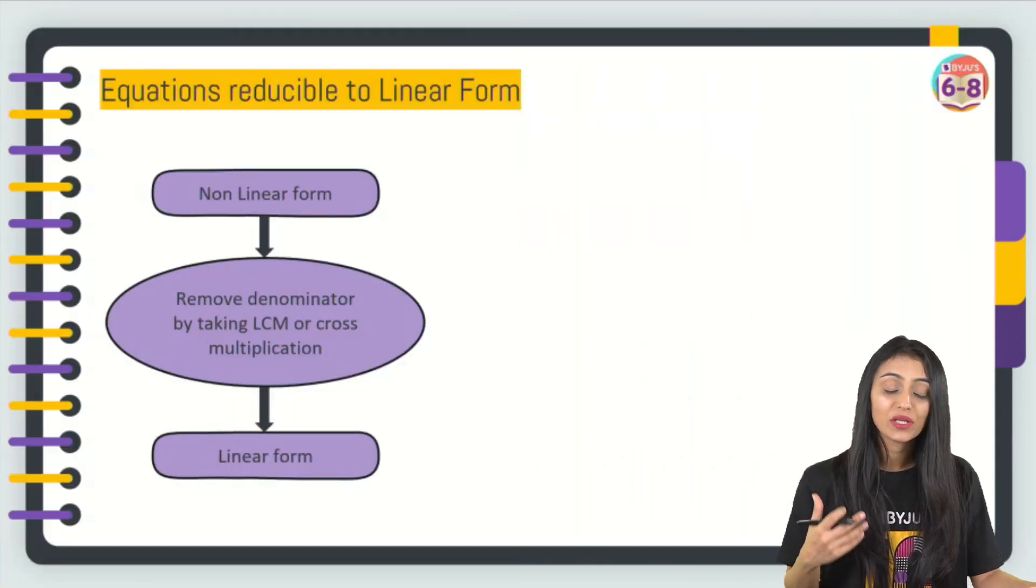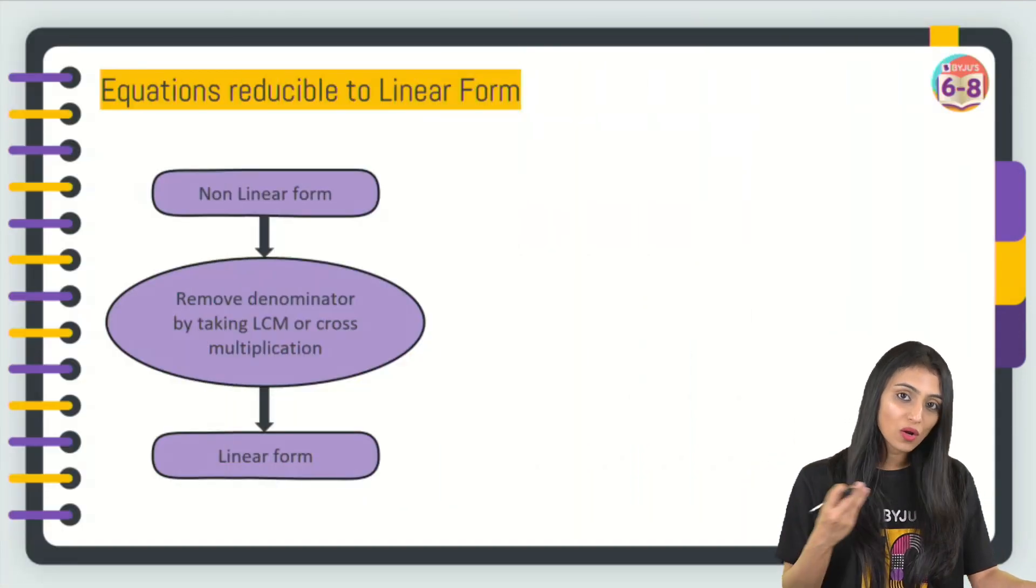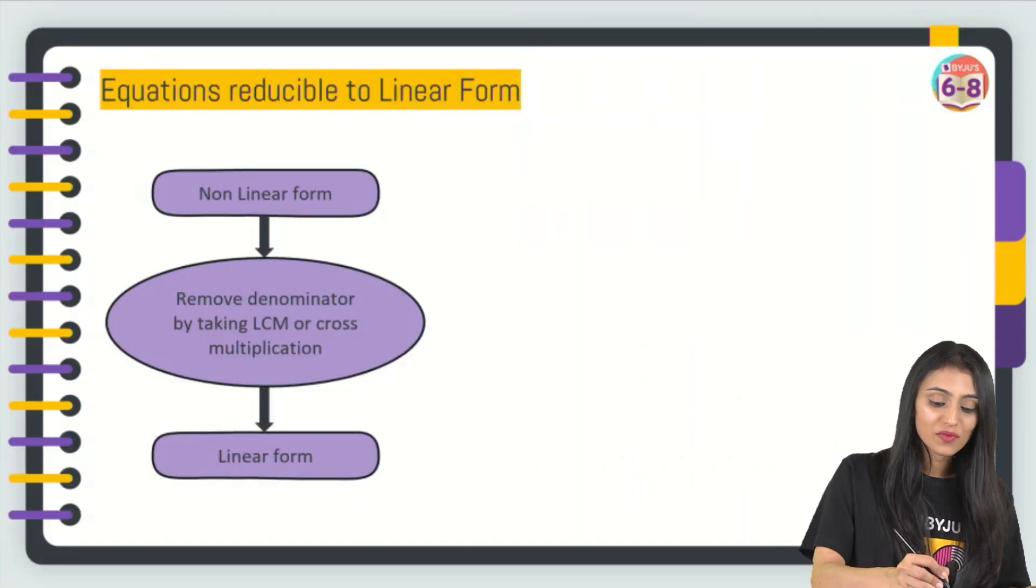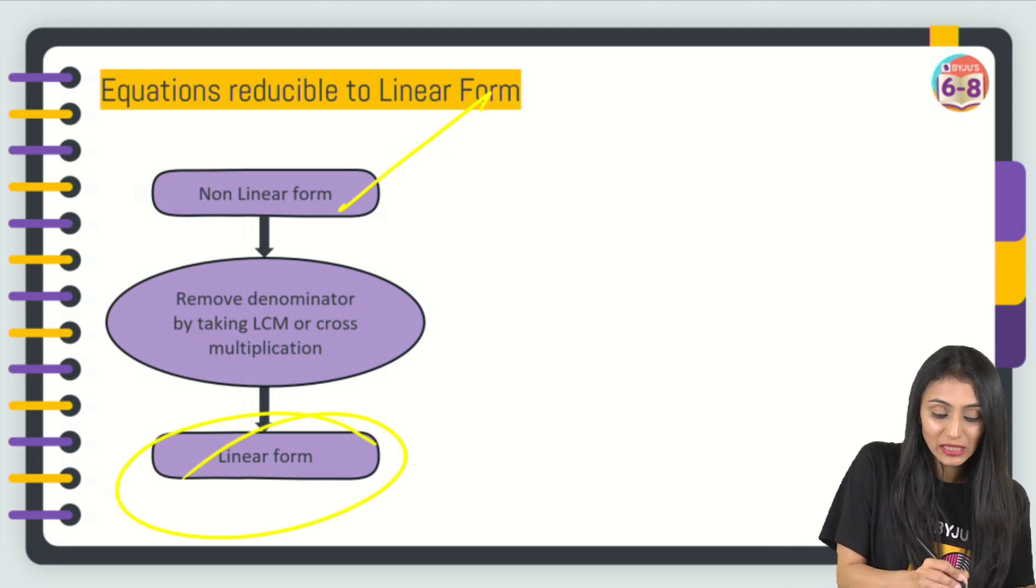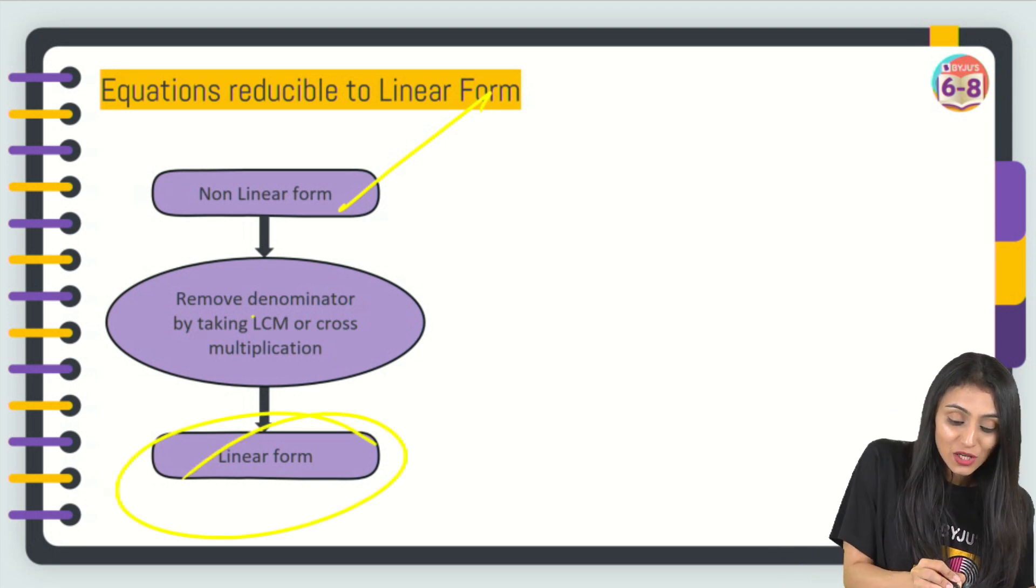How do we reduce equations from non-linear form to linear form? Let's suppose we are given an equation in non-linear form. To convert that into linear form, the first thing that we do is either we remove the denominator by taking LCM, or we do cross multiplication.